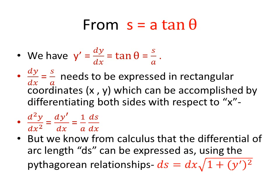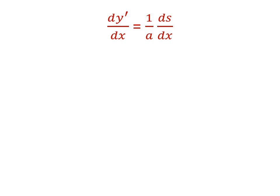Now, this allows us using a very important result in calculus to go further by using the fact that the element of length along a curve, dS, is given by dx times the square root of 1 plus y prime squared.